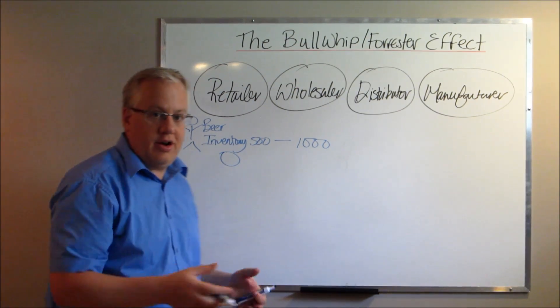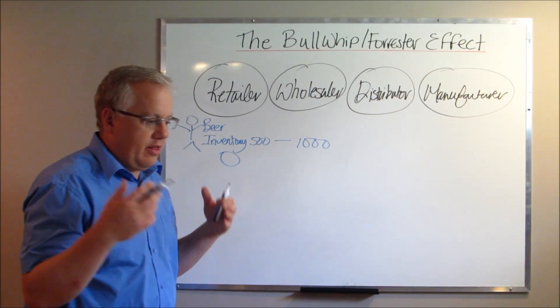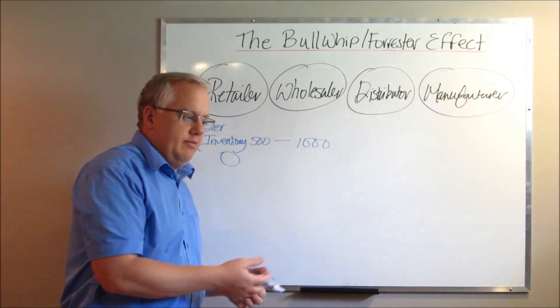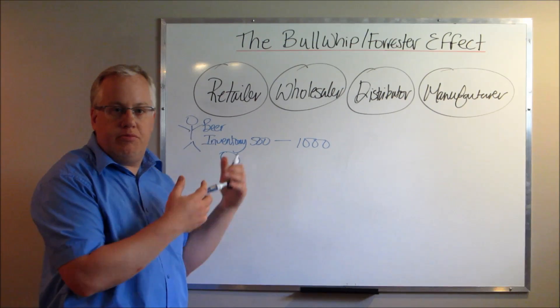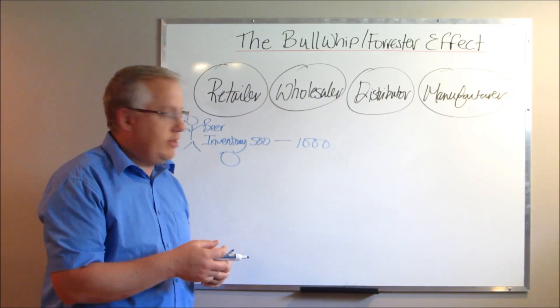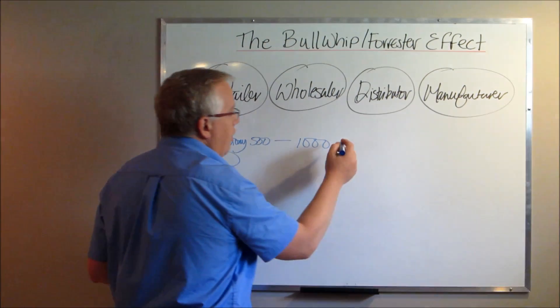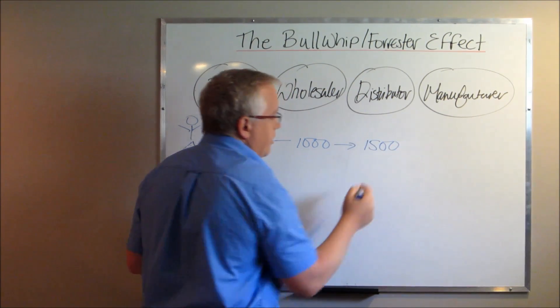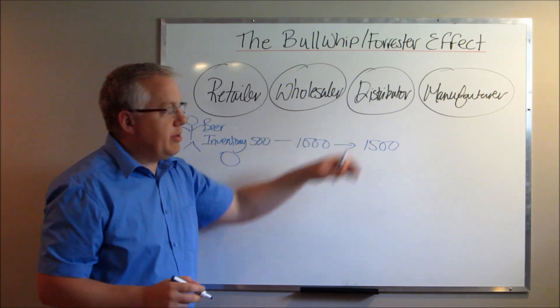So the wholesaler gets this order. Now, the wholesaler says, wow, that's phenomenal. This is much higher than we typically see. We only usually see 1,000 from two retailers. So now we're going to have to place a larger order. And they place a larger order of 1,500 cases of beer to the distributor.